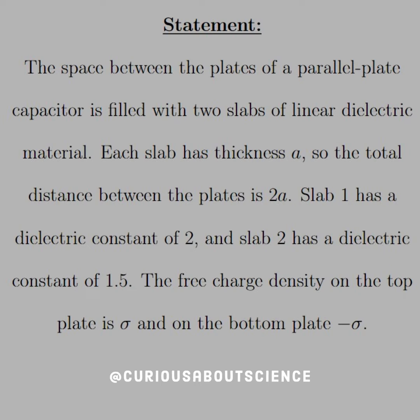Slab 1 has a dielectric constant of 2, and slab 2 has a dielectric constant of 1.5. The free charge density on the top of the plate is sigma, and on the bottom plate, negative sigma.